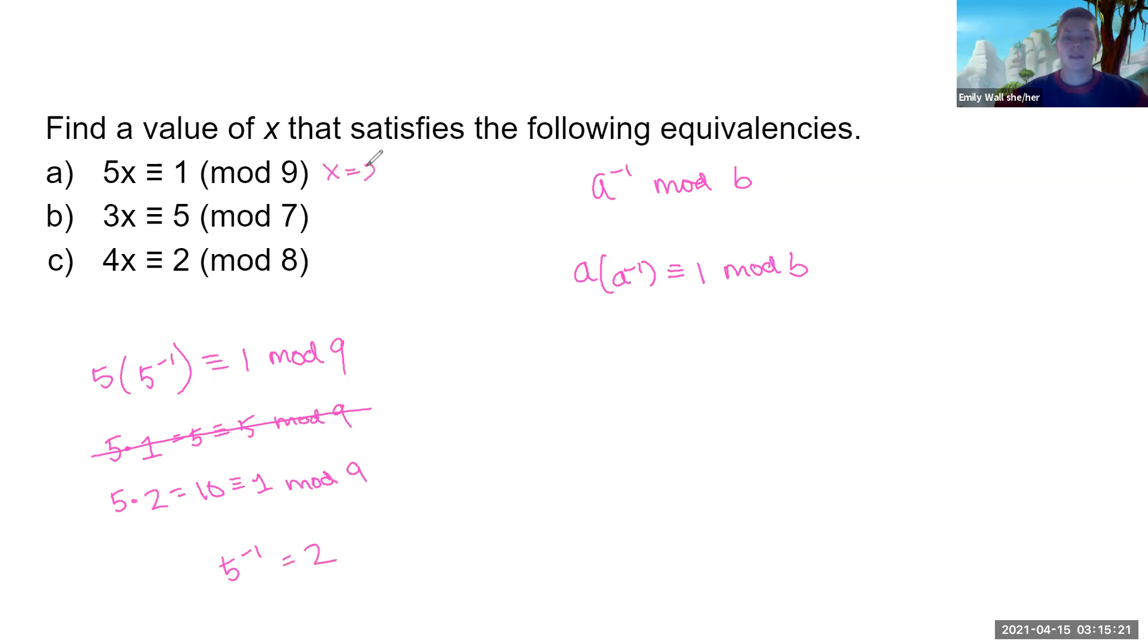So the x that satisfies this, or an x is 2 because 5 times 2 equals 10, which is equivalent to 1 mod 9. That's it.